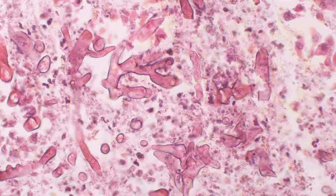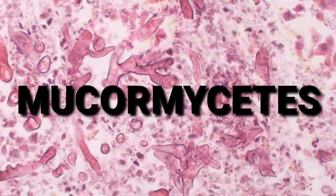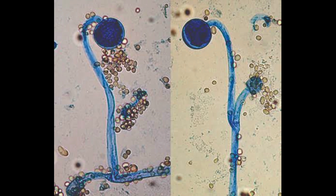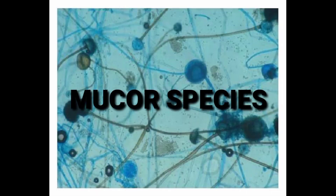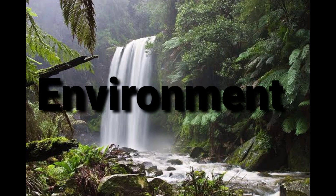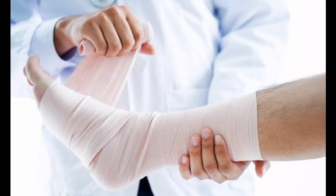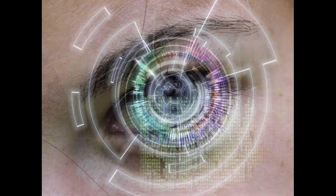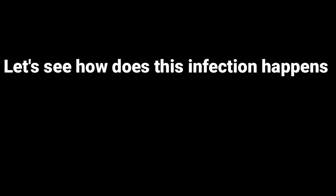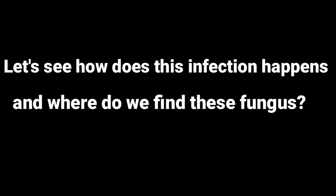Mucormycosis, previously called zygomycosis, is a serious but rare fungal infection caused by a group of molds called mucormycetes. The most common types that cause mucormycosis are Rhizopus species and Mucor species. These molds live throughout the environment — they are almost everywhere. It is creating a huge swelling and inflammation, and many people are losing their vision due to this infection.